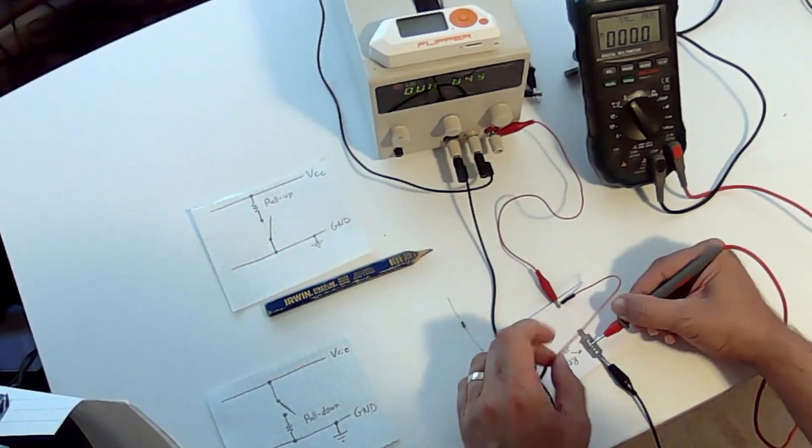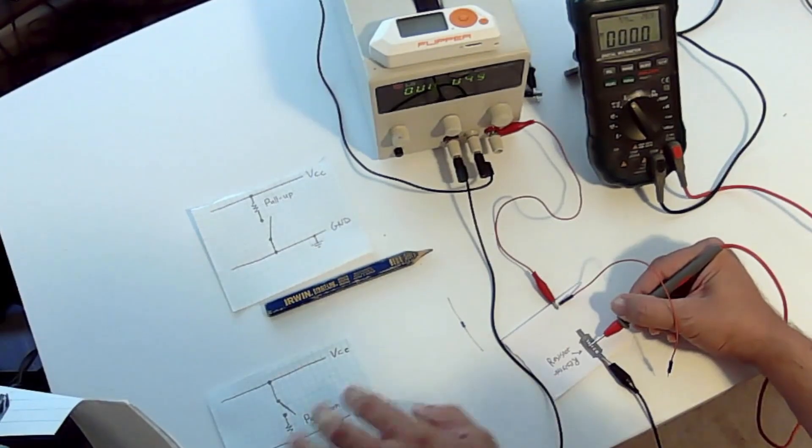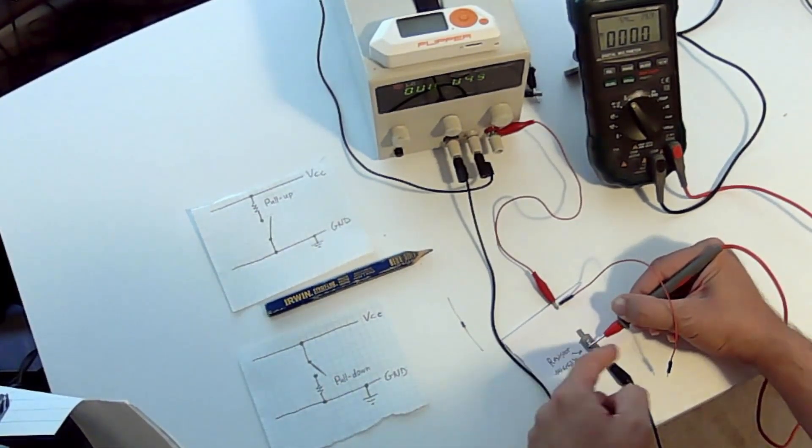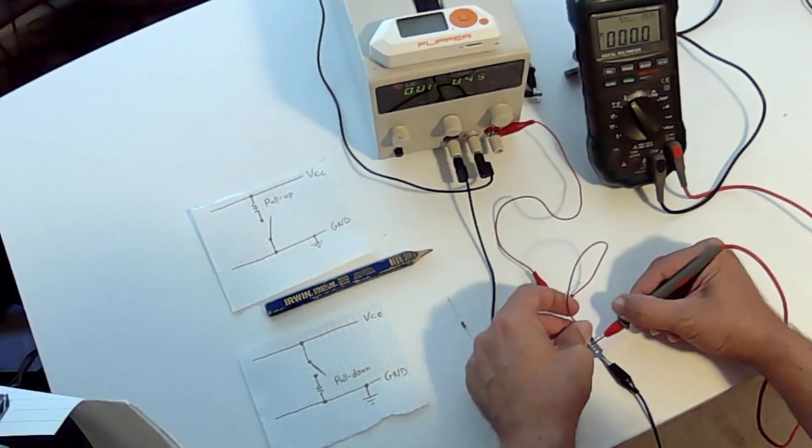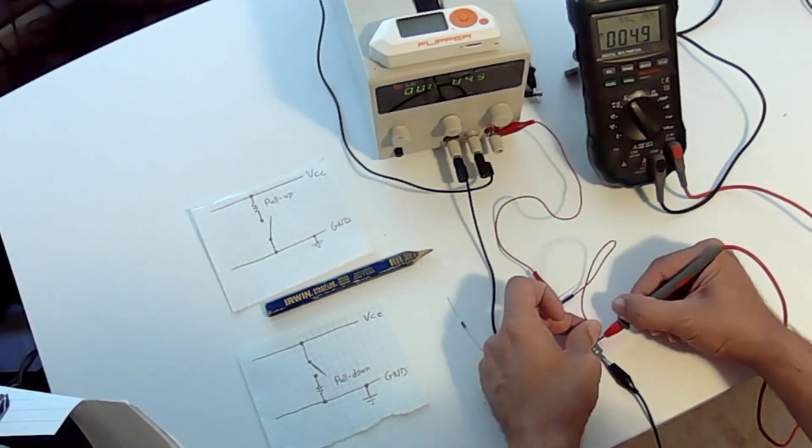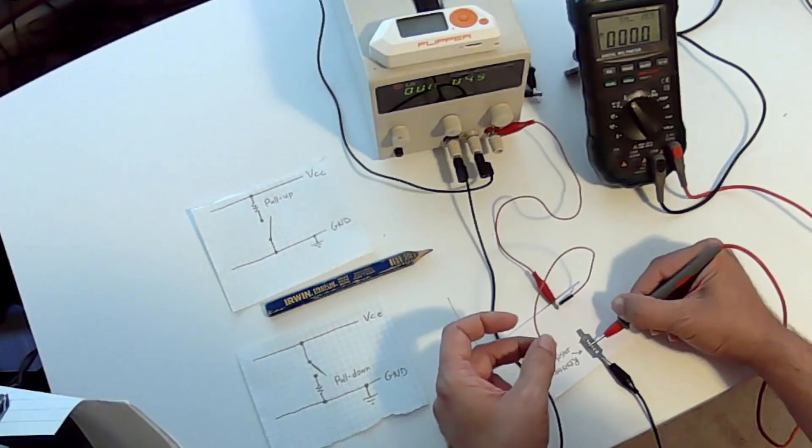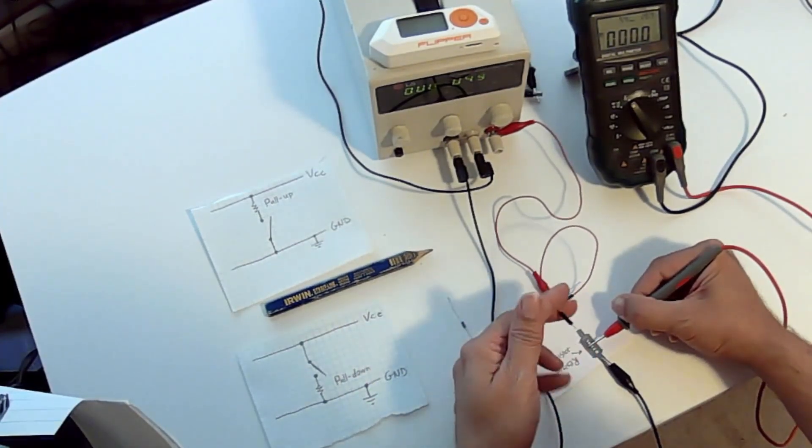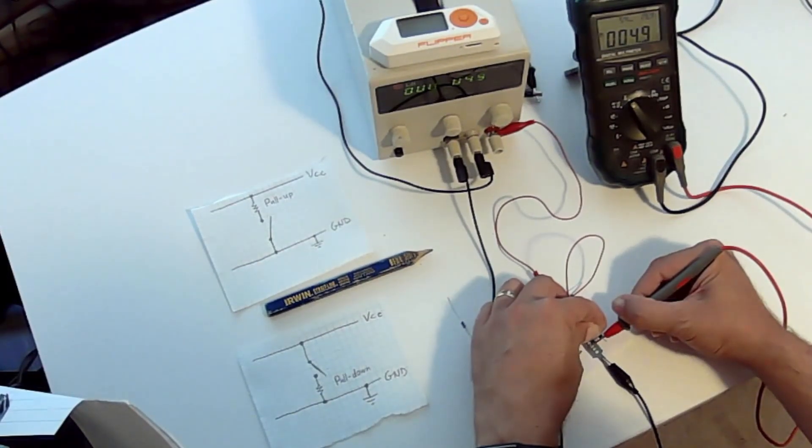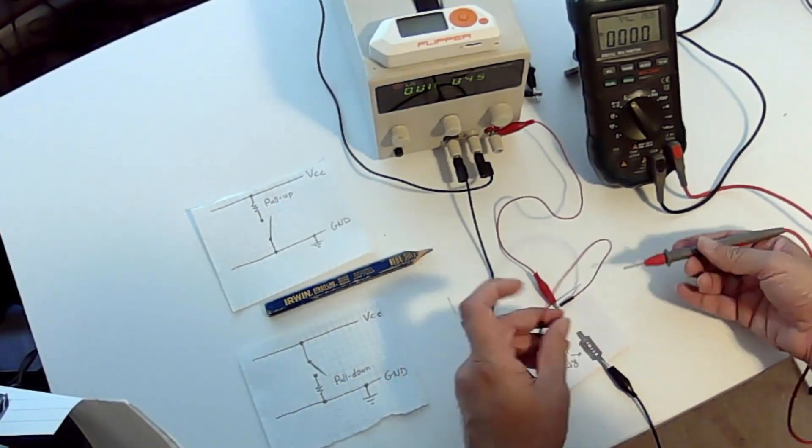So now we're measuring from ground through our pull-down resistor. We're right here, and we're still at zero volts. And then we'll go ahead and connect that wire. And you can see we're at five volts. So zero volts, five volts. So now when the circuit is open, we'll get a zero voltage. And when the circuit's closed, we'll get a five voltage. So that's pull-up and pull-down.